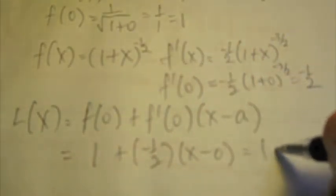f'(0) by (x - 0). So this will be 1 plus -1/2 by (x - 0), which of course is 1 - 1/2 x. So this is our linear approximation of this function near the origin.